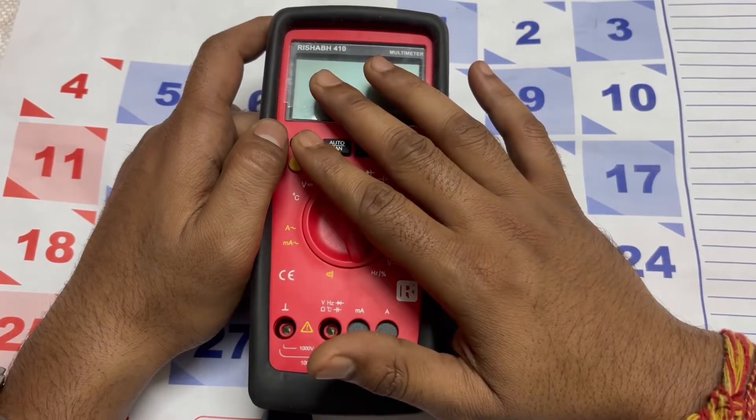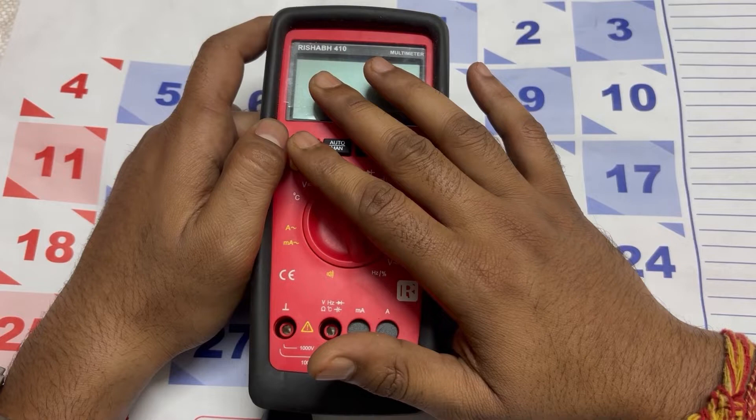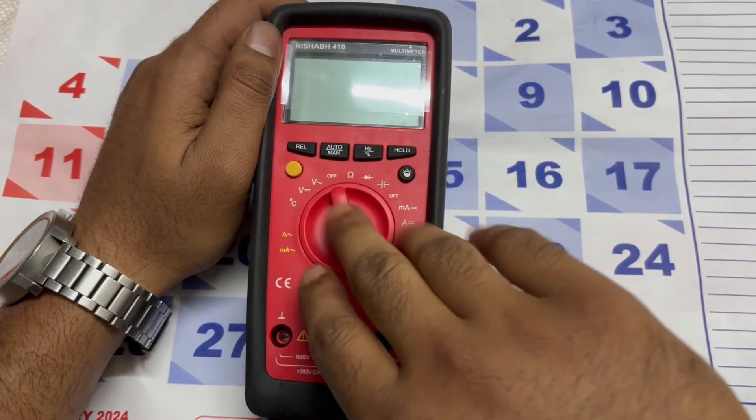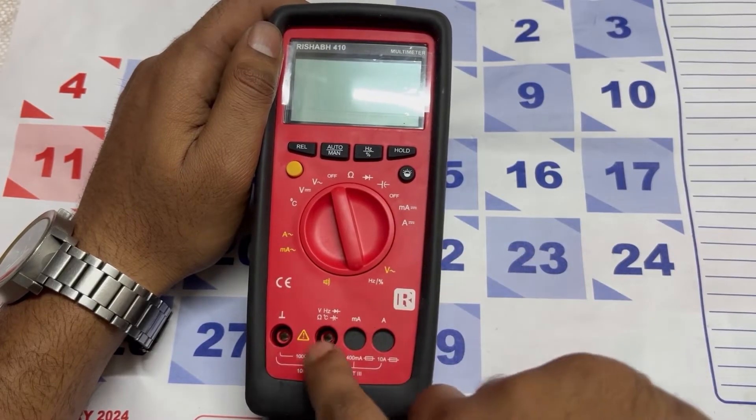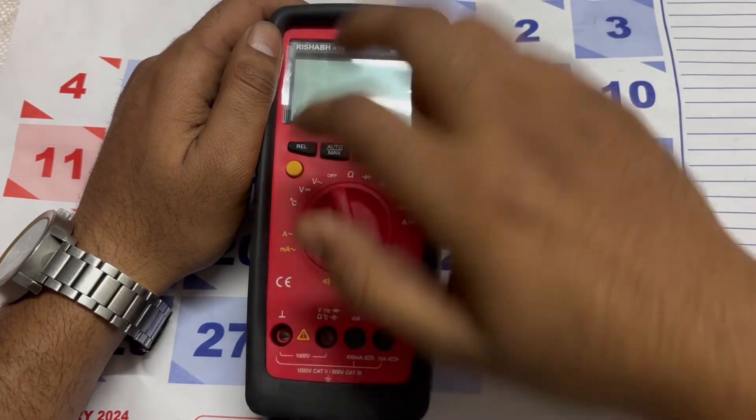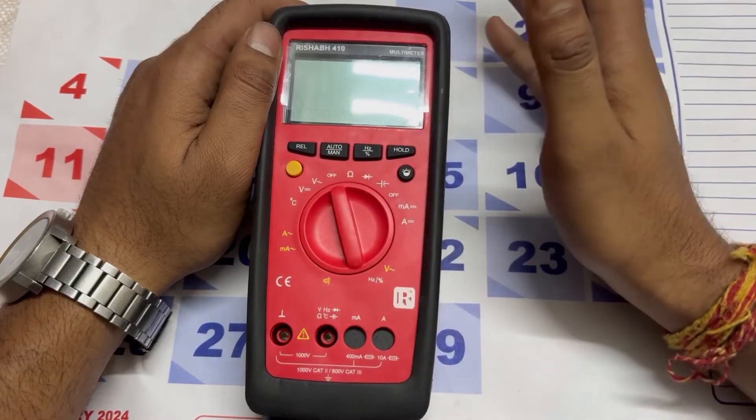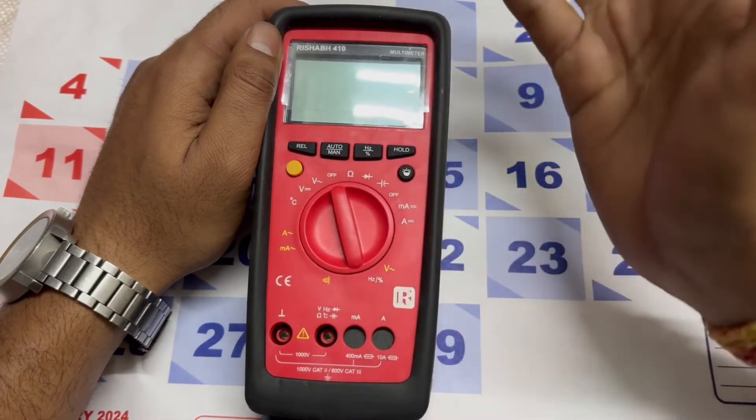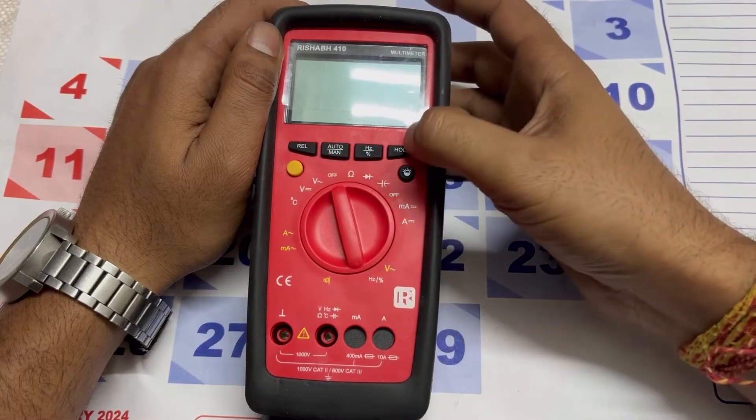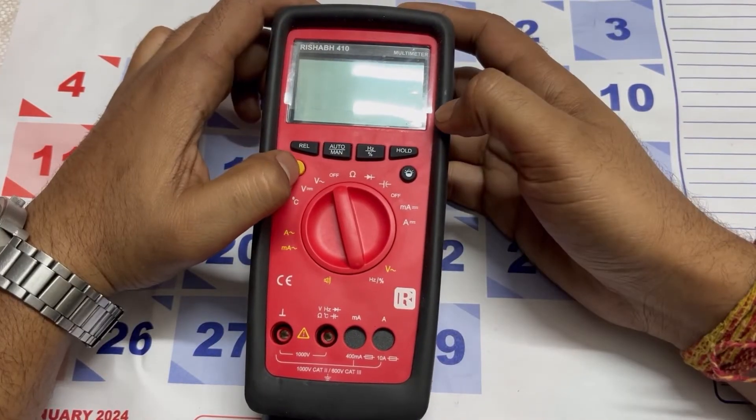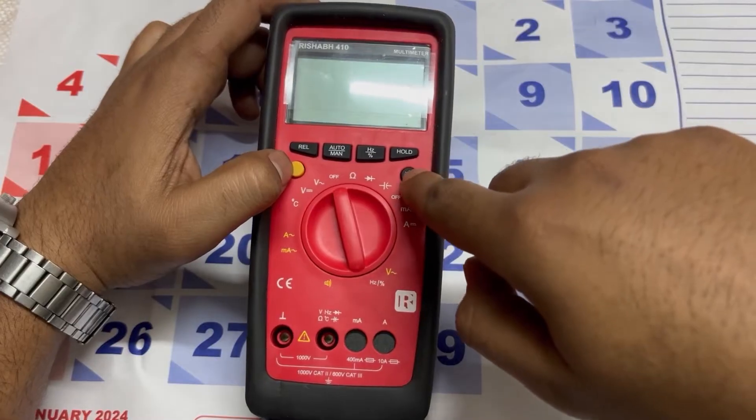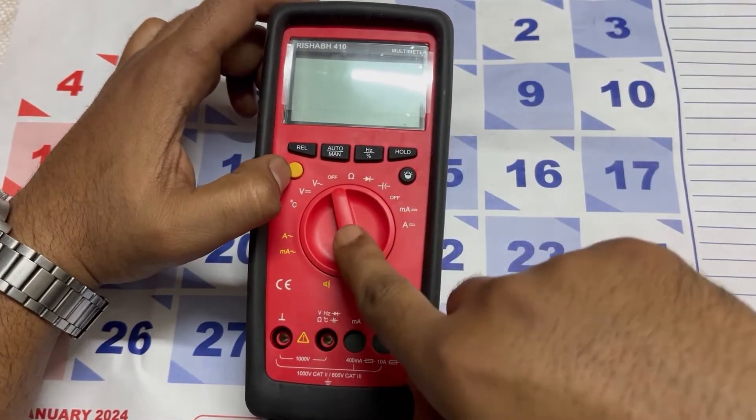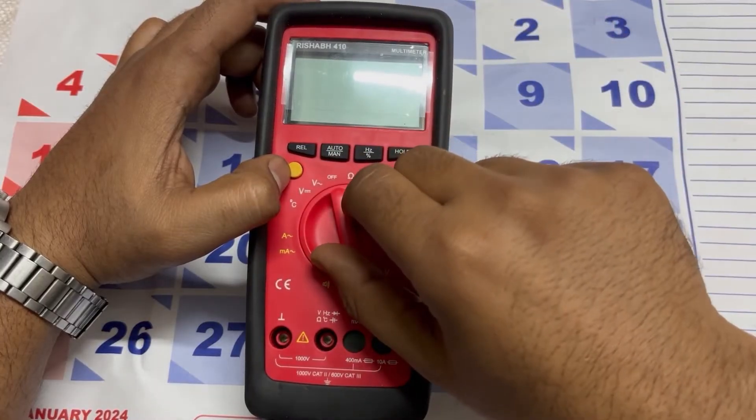Now you can see some buttons here and the selector switch with connecting probes. Firstly, this button is for relative value, this button is for auto manual switching, this is for Hz frequency measurement, and this is the hold key. The yellow button is used for continuity testing and this is for the backlight of the display.